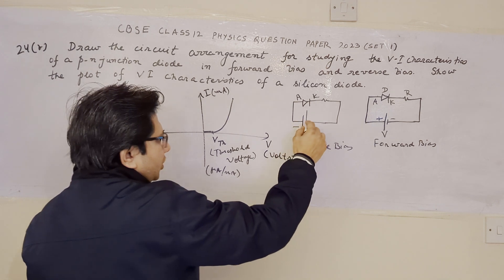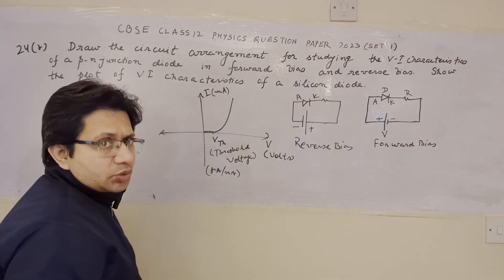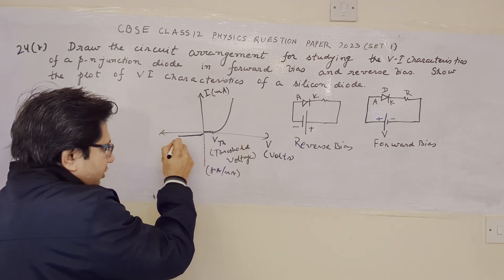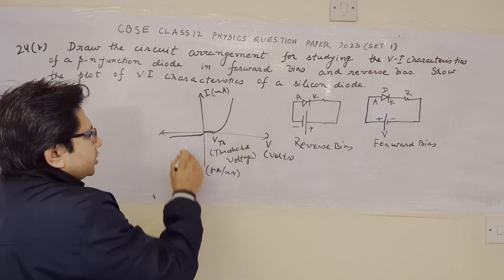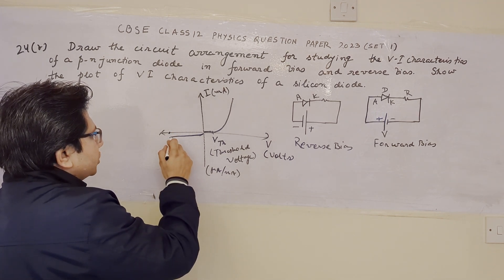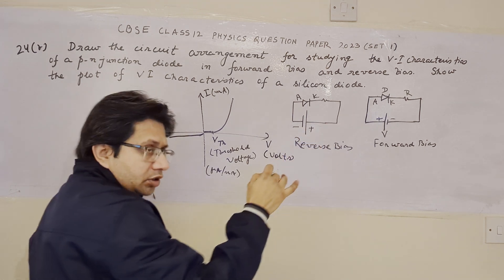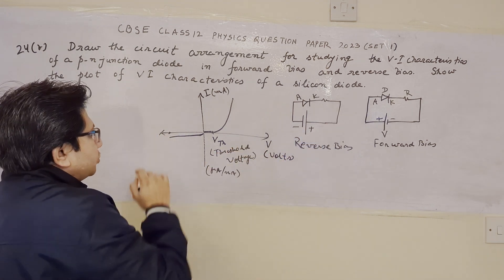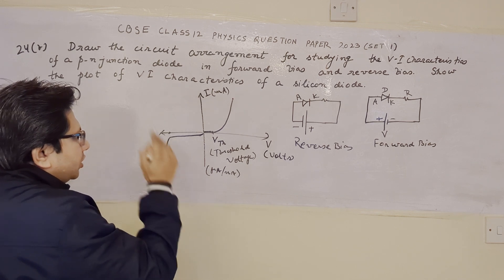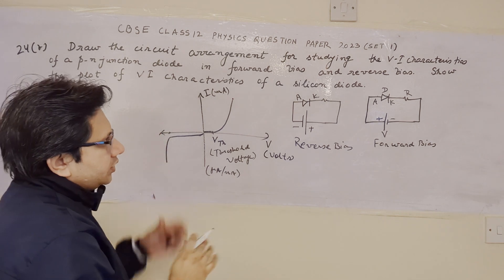For the reverse bias, the diode shows a reverse saturation current which we can show on this particular graph. This is the reverse saturation current — it is in the microampere range. Up to a certain level it stays constant, but if the voltage increases more and more in the negative direction, a certain point is reached when there is a breakdown phenomenon. The diode shows the breakdown phenomenon. This is the characteristic curve.